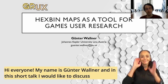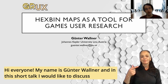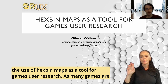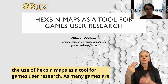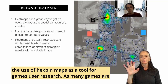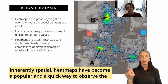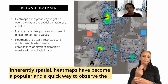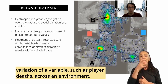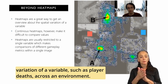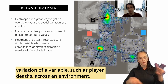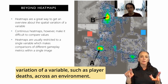Hi everyone, my name is Günter Wallner and in this short talk I would like to discuss the use of hexpin maps as a tool for games user research. As many games are inherently spatial, heatmaps have become a popular and quick way to observe the variation of a variable such as player deaths across an environment.